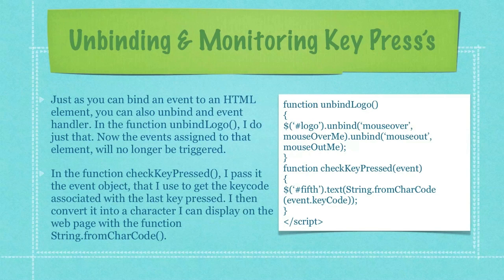Just as you can bind an event to an HTML element, you can also unbind an event handler. In the function unbind_logo, I do just that — now the events assigned to that element will no longer be triggered. In the function check_key_pressed, I pass it the event object that I used to get the key code associated with the last key pressed on the keyboard. I then convert it into a character I can display on the web page with the function String.fromCharCode.